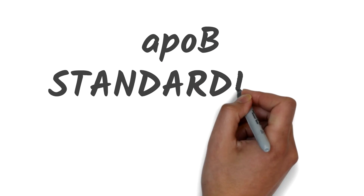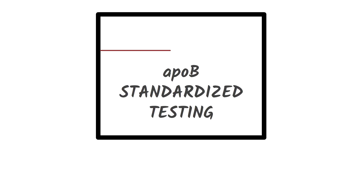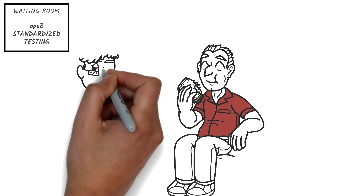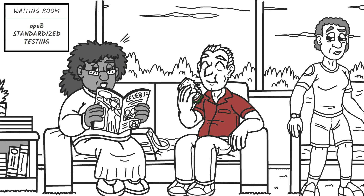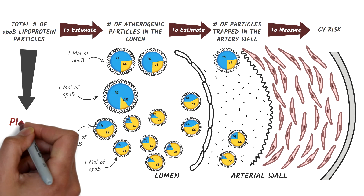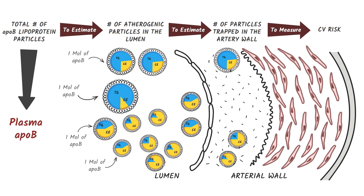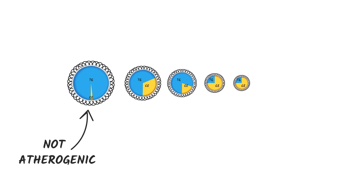And can that be measured? Yes. Plasma ApoB can be measured rapidly and accurately using standardized automated tests that don't require patient fasting. And because each ApoB lipoprotein particle, regardless of its size, always has one molecule of ApoB, plasma ApoB is the total number of all ApoB lipoprotein particles.